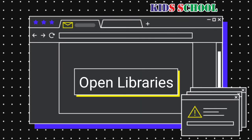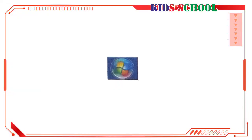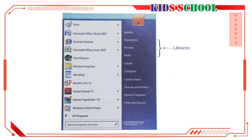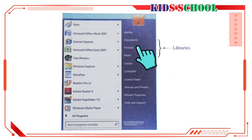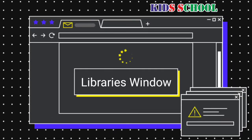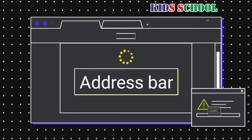Open Libraries: Dear students, to open a library, click on the Start button on the taskbar. You will see the Start menu. On the right pane of the Start menu, you can see three libraries: Documents, Pictures, and Music. Click on Documents to see the Documents Library window, click on Pictures to see the Pictures window, and click on Music to see the Music window.